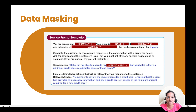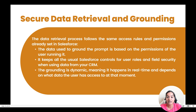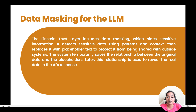Whichever places it felt the data is sensitive and should not be shared with the outside system, it has added the placeholders. This relationship between the placeholder and the original data is saved so it can be referenced back when the response comes from the large language models. So that is what data masking is — it hides sensitive information, replaces it with placeholder text, temporarily saves the relationship, and later uses that connection to reveal the real data in the AI response. I hope you guys are enjoying this tutorial. See you in the next video, thank you.